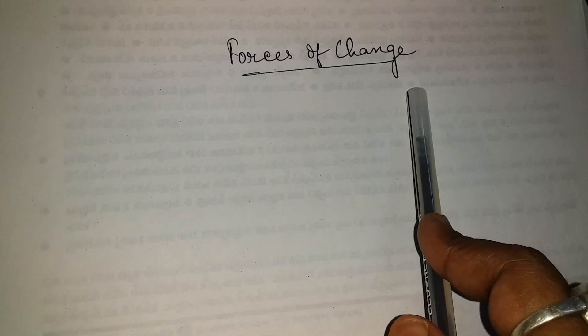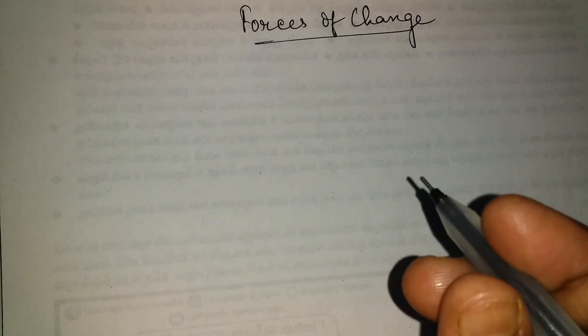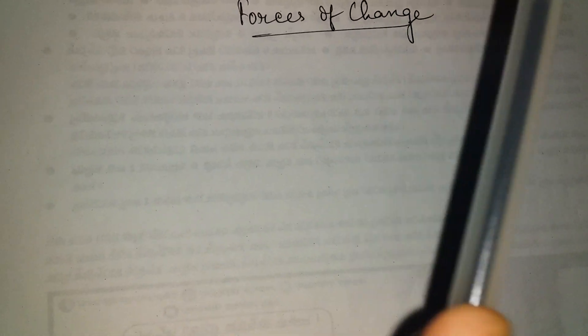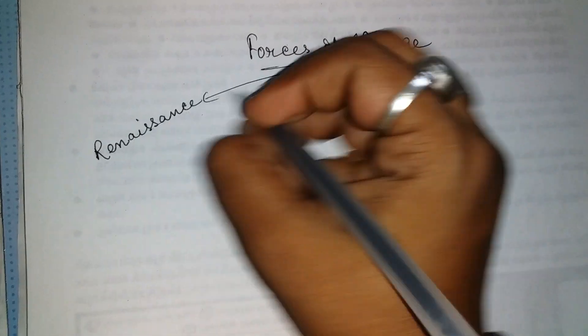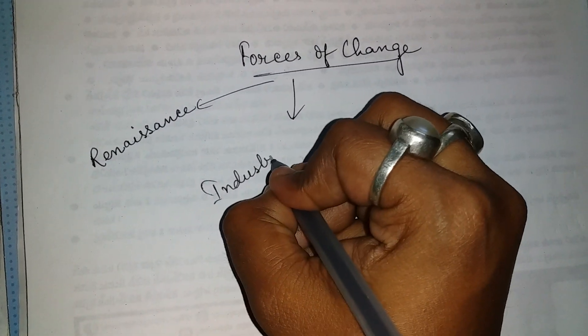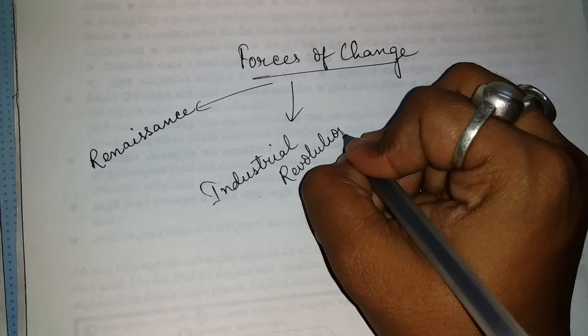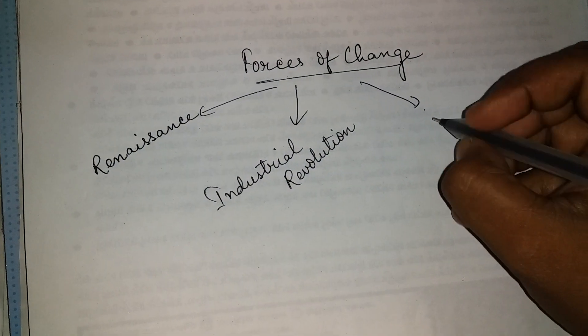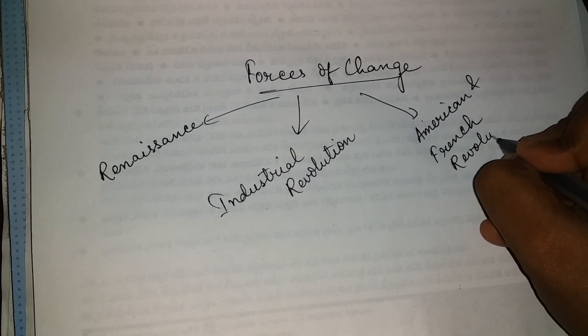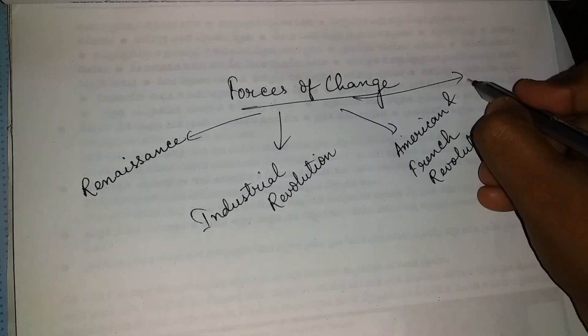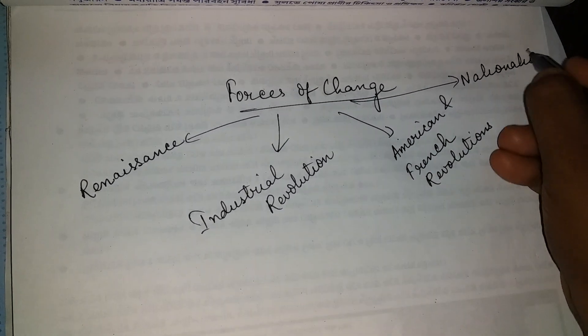We are going to cover the forces of change from chapter number one. First of all, we need to know what were the forces responsible for the change that characterized the modern age. These forces are: number one, Renaissance; number two, Industrial Revolution; number three, American and French Revolutions; and finally, Nationalism.